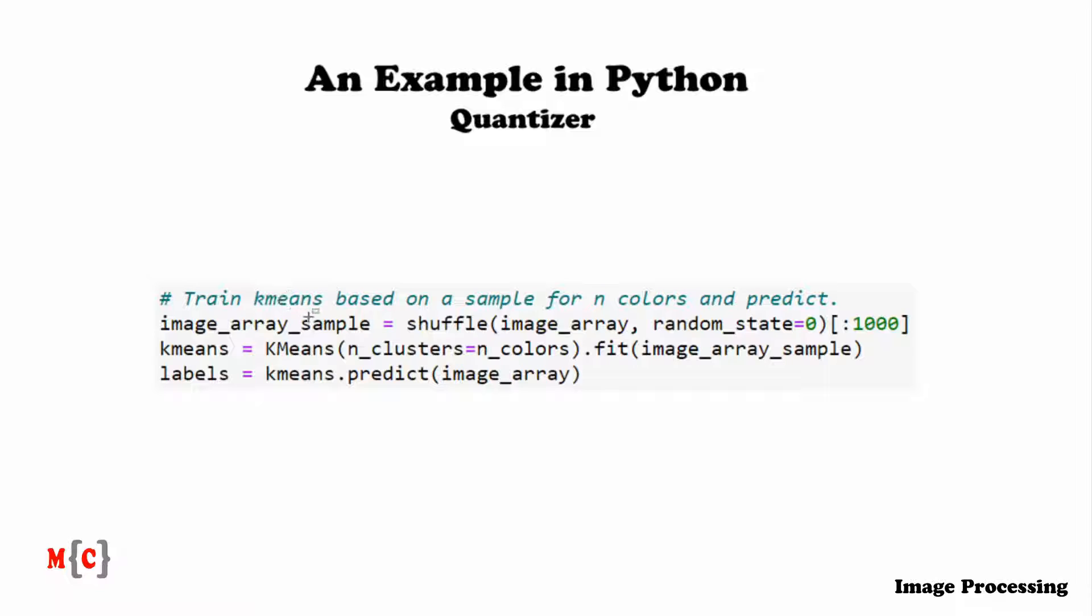For this, I take a random image sample. Then I'm going to train k-means based on the sample. And then we're going to let k-means predict the labels that will correspond to the image pixels.